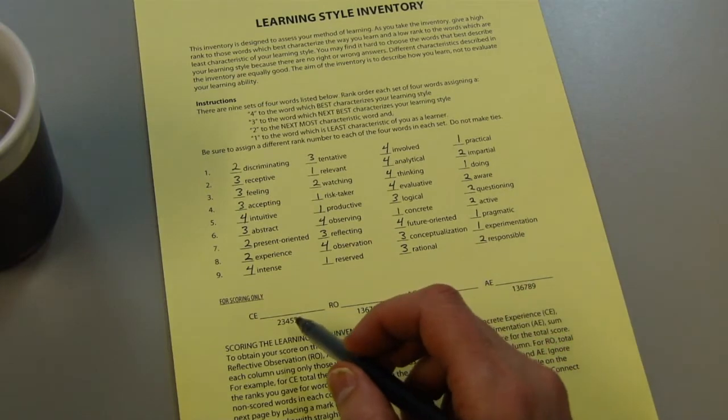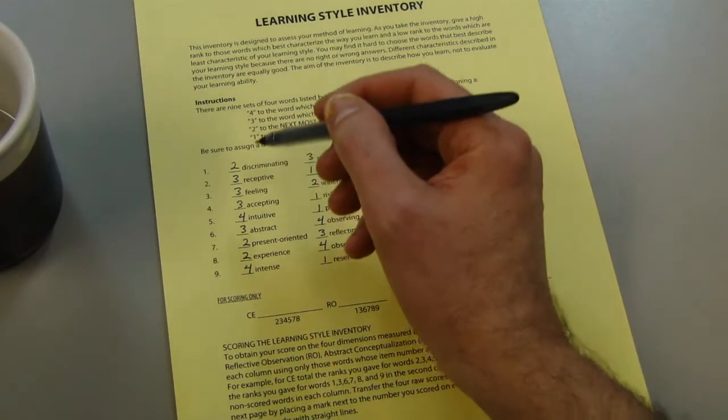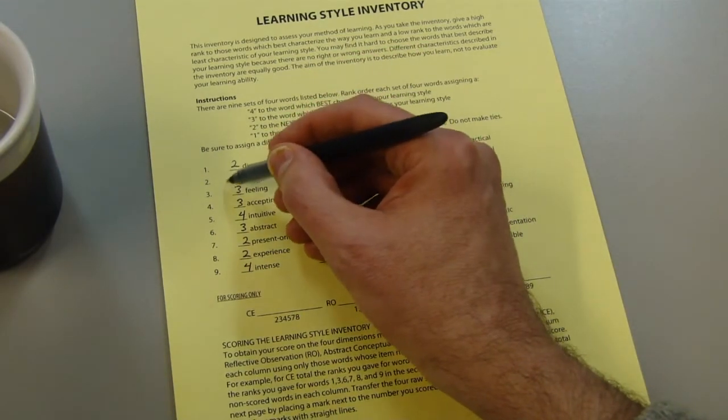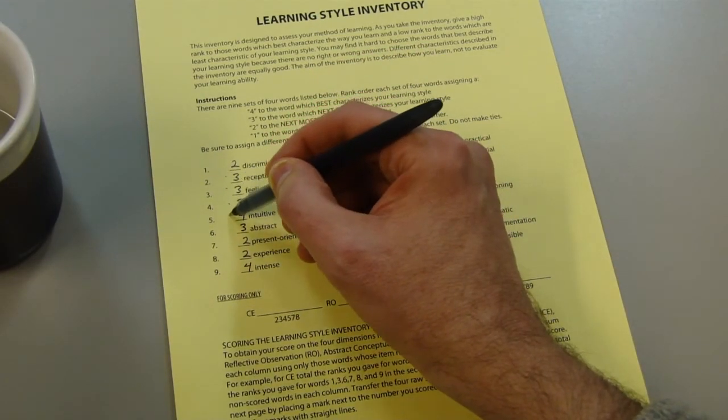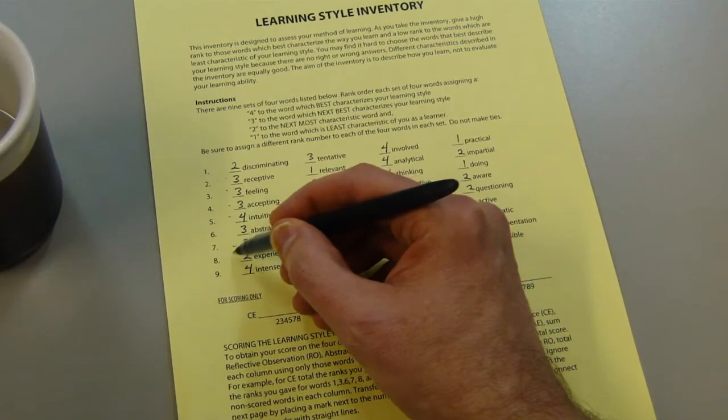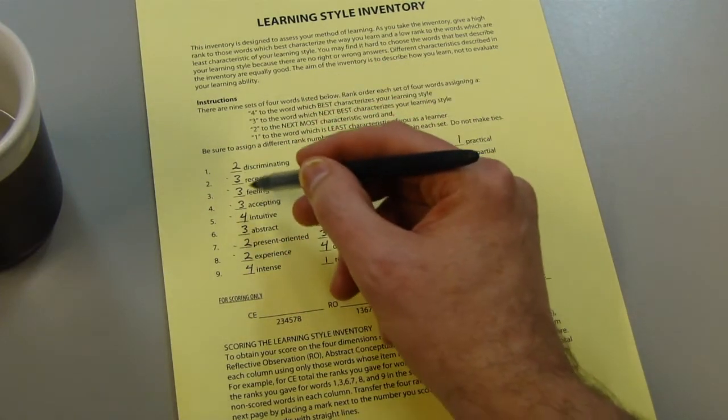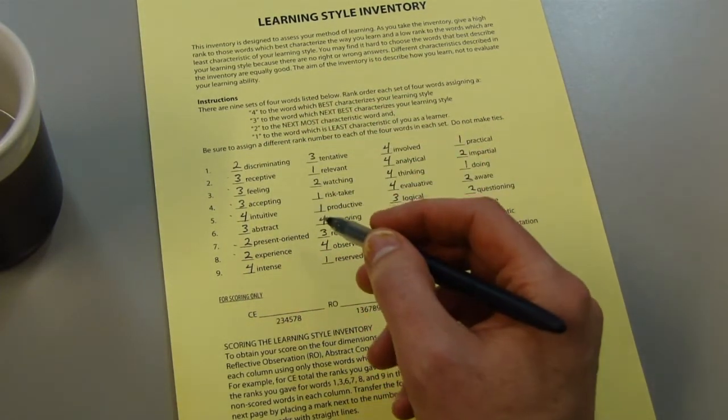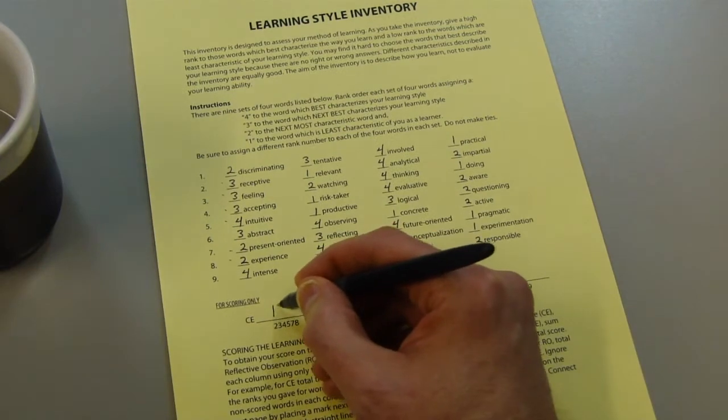So for example, in this first column, the CE column, I'm going to be looking at questions 2, 3, 4, 5, 7, 8. And so then if I add those up, I get 17.